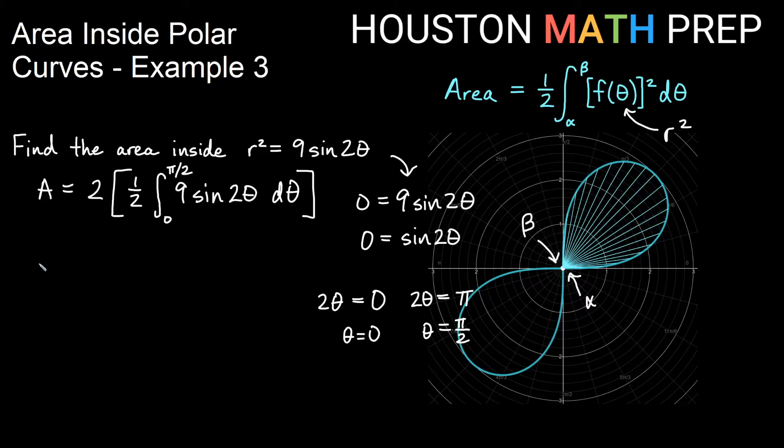Now I don't have to worry about squaring here. My 2 times ½ reduces to 1. Let's bump our 9 out, giving us 9 times the integral from 0 to π/2 of sin(2θ)dθ.